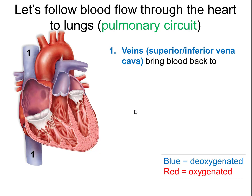The first step: blood enters the heart through veins — veins carry blood back to the heart. Blood comes in through either the superior vena cava from the top, or the inferior vena cava from the bottom. Any blood from above the heart, such as from the head, returns via the superior vena cava. Any blood from below the heart, such as from the torso or legs, comes up through the inferior vena cava.